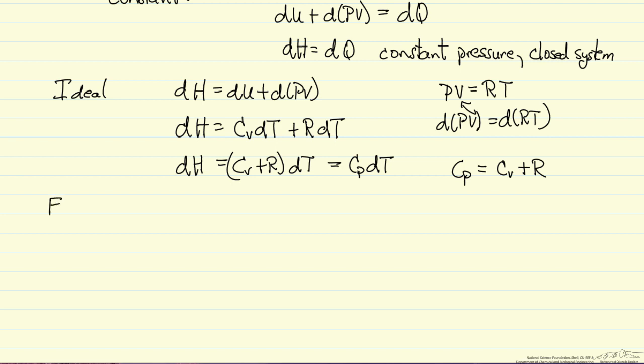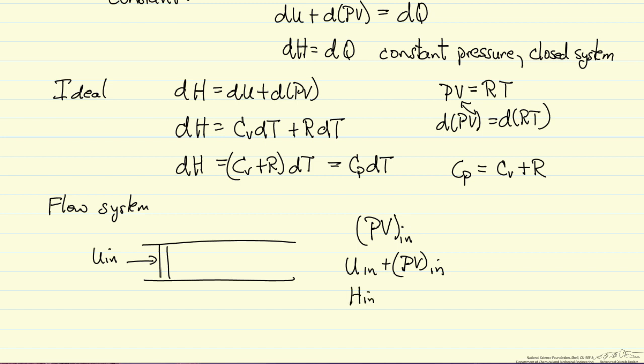Another instance where enthalpy shows up is in a flow system. Imagine flowing some packet of gas or liquid. It has some internal energy coming in, and to push this through the system, we do work on it. PVin is the energy it takes to move it through. You can look at the total energy, with similar terms for leaving the system. We can look at the enthalpy in and the enthalpy out. So again, enthalpy is a convenient term. But remember, enthalpy is just U + PV.